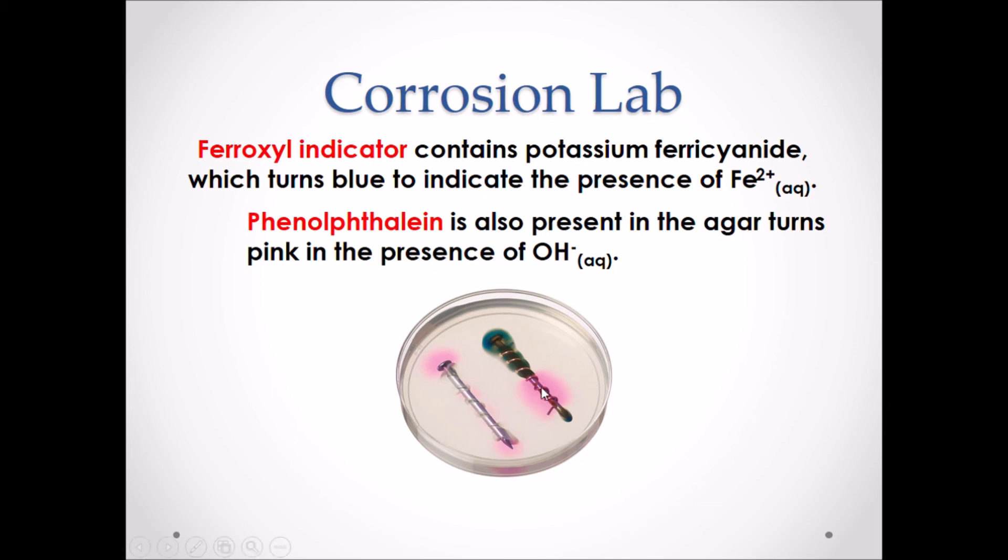If we look at the two examples provided here, we have an iron nail. Both iron nails are wrapped with a different metal. We are trying to determine which of the metals will protect the iron nail from corrosion. Just by looking at the colors present in the agar solution, we can determine what reactions are occurring.